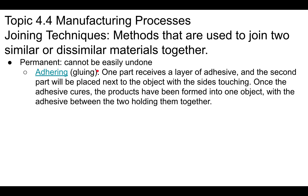One of the first permanent joining techniques is adhering, or glue. You're using an adhesive — putting it on one part, then adding a second part to glue them together. Once the adhesive cures — and it's important to use the word 'cures' rather than 'dries,' because glues cure, not dry — you have one joined body.